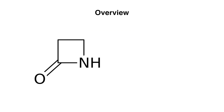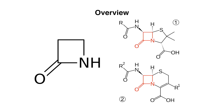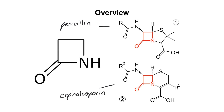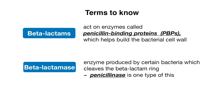Our beta-lactam antibiotics are so named because of their beta-lactam ring, which is found in the chemical structure of all these antibiotics. In diagram number one, you can see a basic structure of penicillin, and in diagram number two, you can see a basic structure of cephalosporin, which we will discuss in a separate video. Let's begin by going over some terms to know, which are key to keep in mind because they can be very confusing as they sound similar.